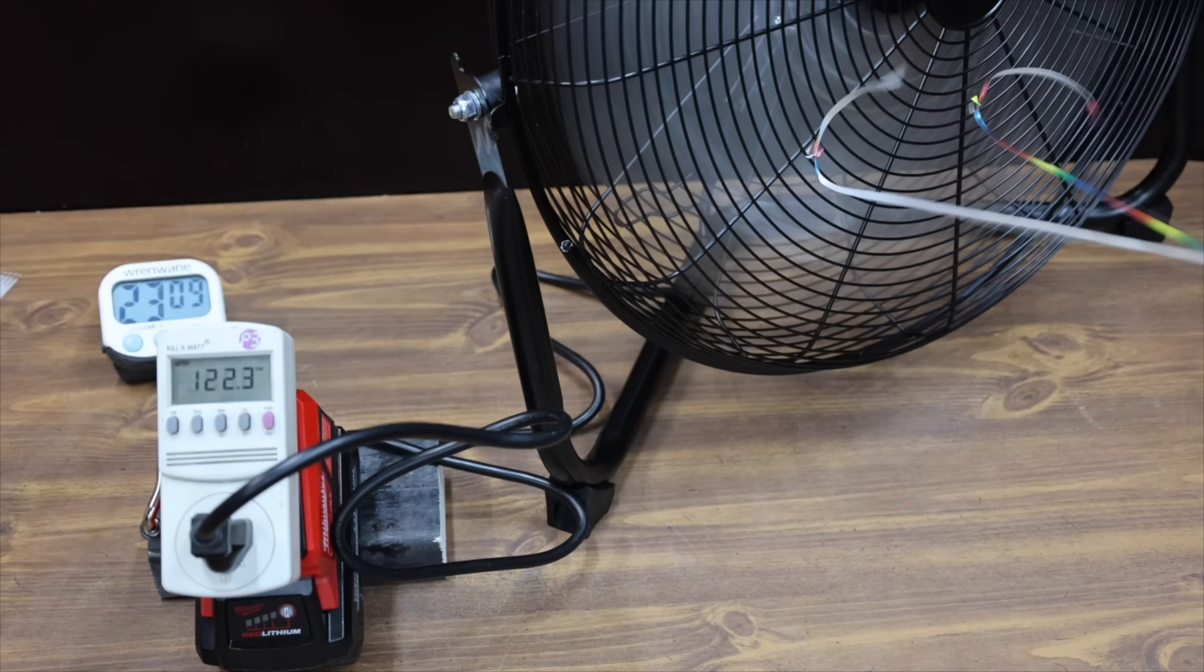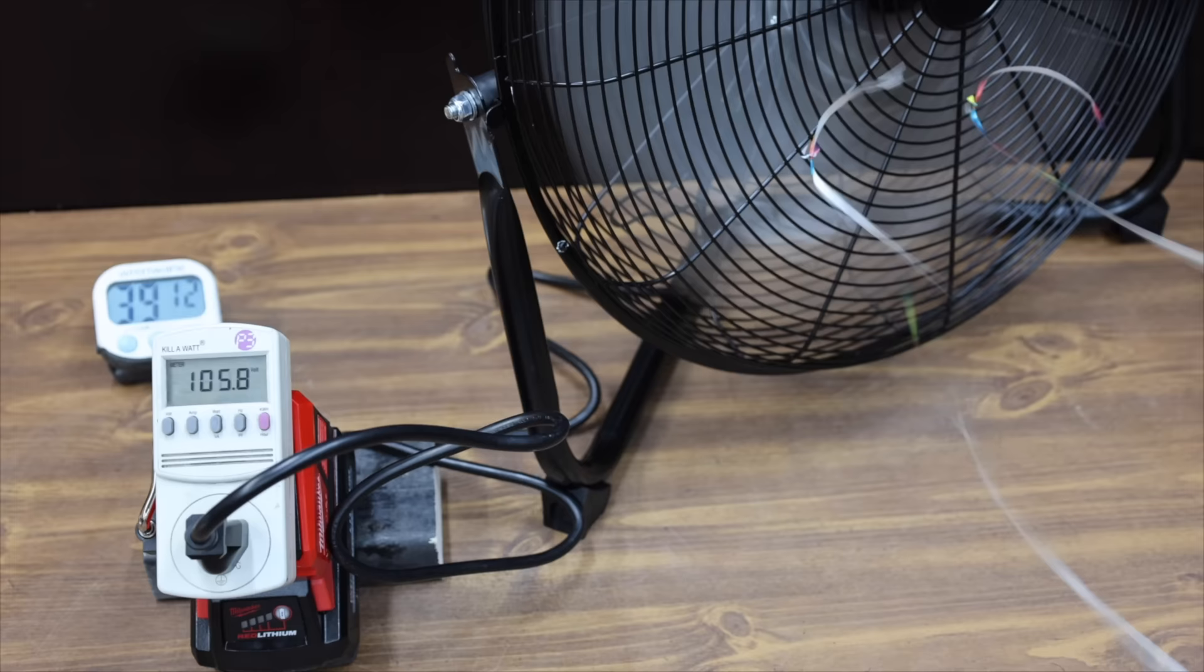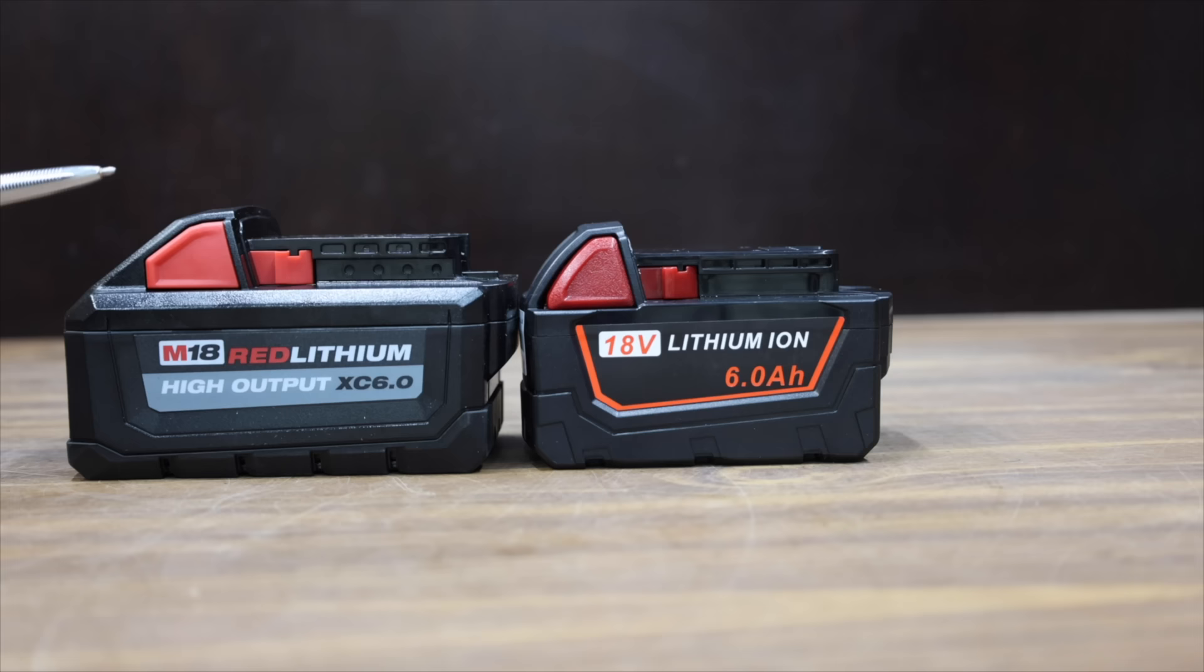At 23 minutes the Milwaukee still has a lot more juice to give, and the genuine Milwaukee is still smiling at 32 minutes. A 6 amp hour Milwaukee is finally out of juice at 39 minutes and 15 seconds. So the Milwaukee lasted more than twice as long as the Emityke.